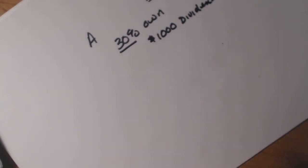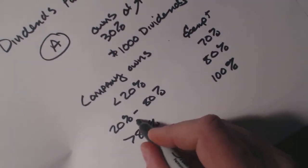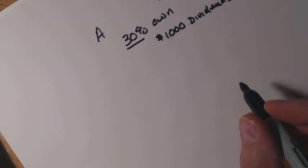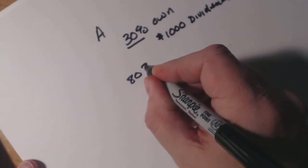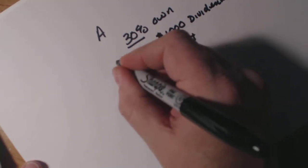Now, since they own 30%, let's go back to this chart right here, they own 30%, they are 80% exempt. And that is based upon the amount of ownership.